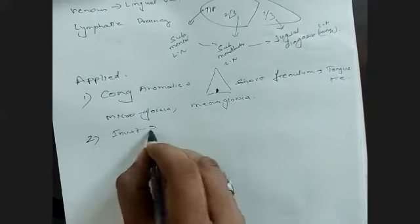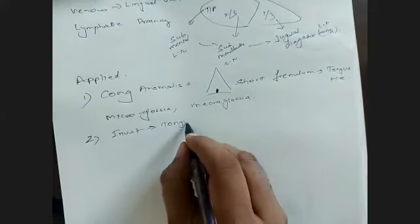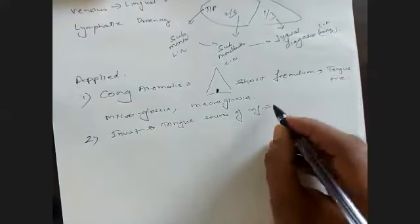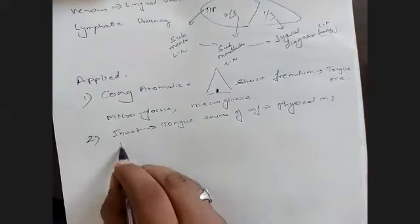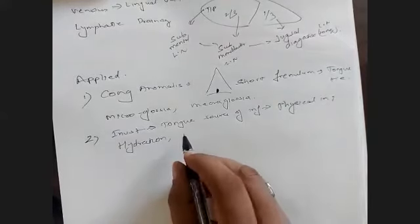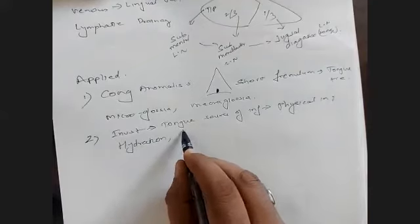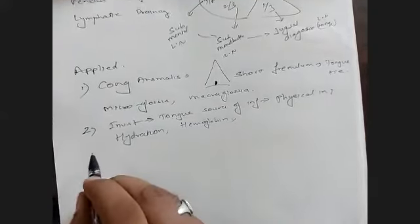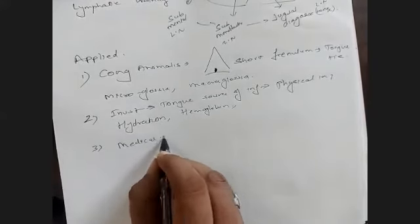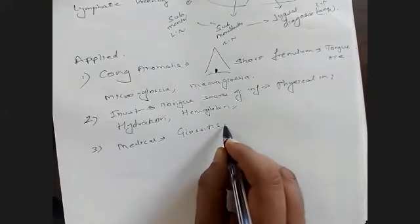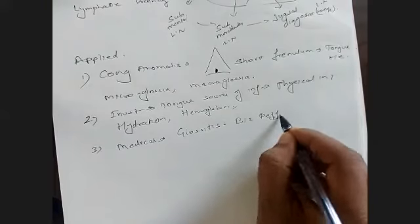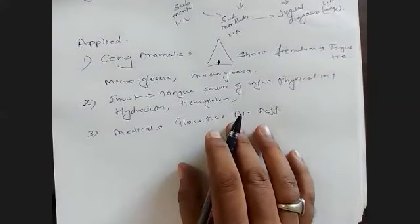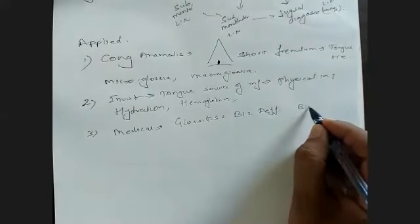Second, tongue as a source of information during physical examination. It tells us about hydration of the body - if the tongue is moist, that person is hydrated. It tells us about hemoglobin status - if the tongue is pale, hemoglobin is less and the person has anemia. Medically, inflammation of the tongue is called glossitis, very common in B12 deficiency. Stress ulcers are also very commonly seen on the tongue, and they respond very nicely to vitamin B12 tablets.